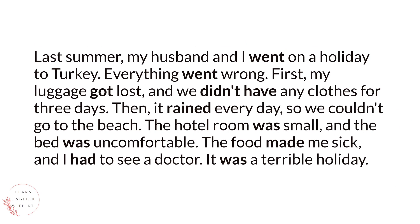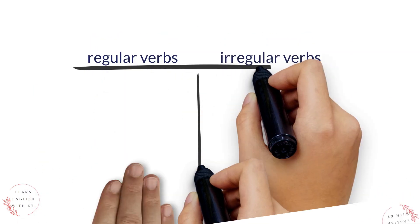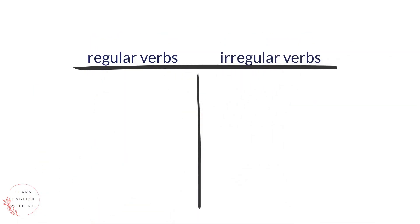We use the past tense to talk about something that happened in the past. With most verbs, the past tense is formed by adding ED. For example, enjoy becomes enjoyed. But there are a lot of irregular past tense forms in English.